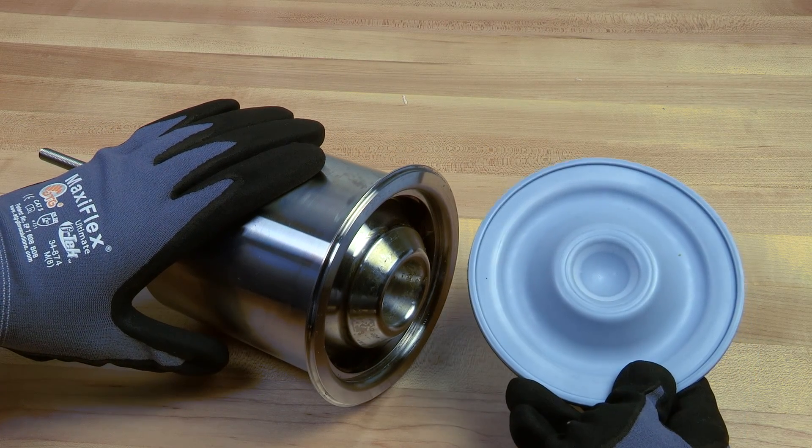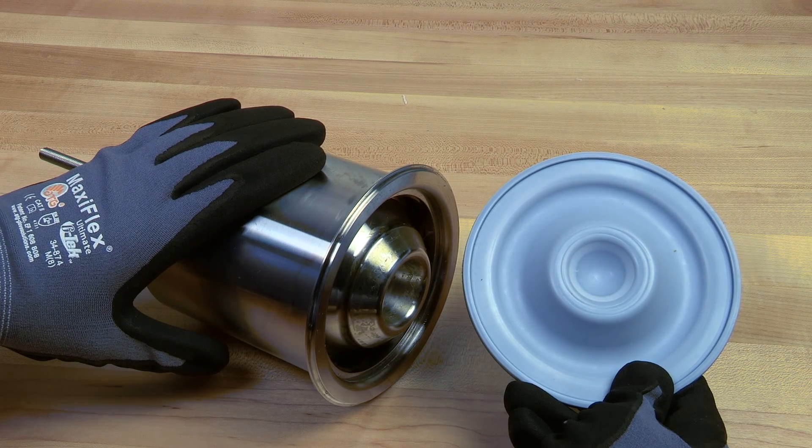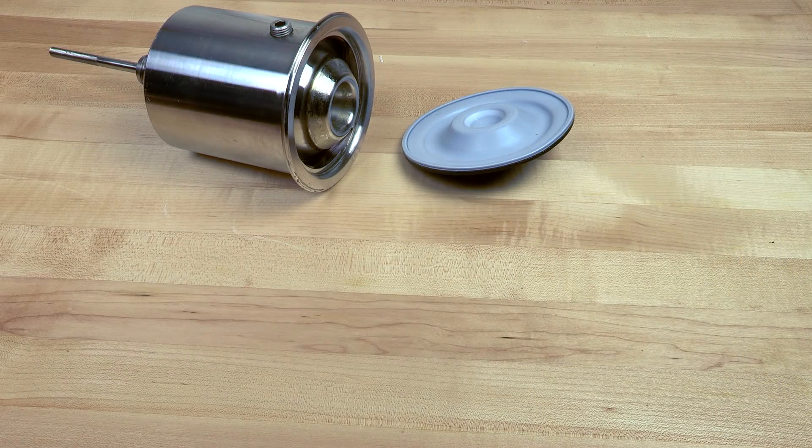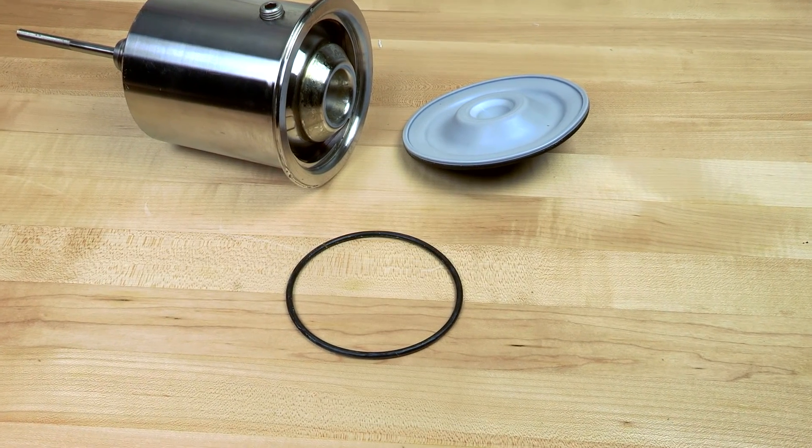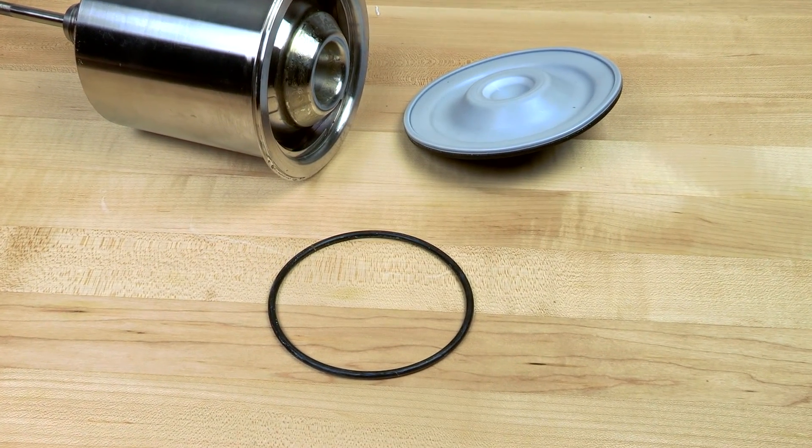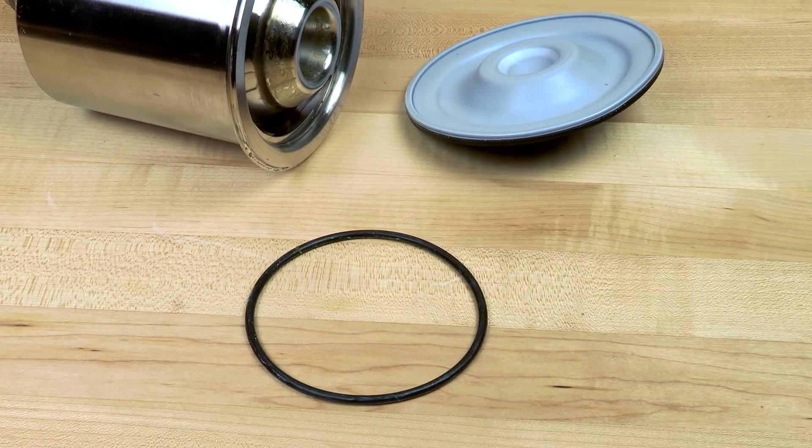With the bonnet assembly complete, it's time to install the diaphragm and attach the assembly to the valve body. When installing the diaphragm, you must first install an O-ring which helps protect the diaphragm from wearing against the bonnet on 1.5 and 2 inch valves only.